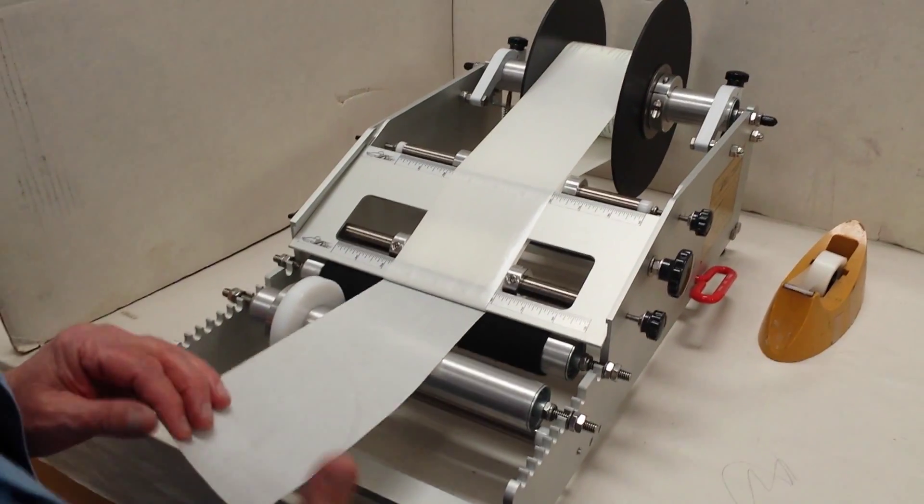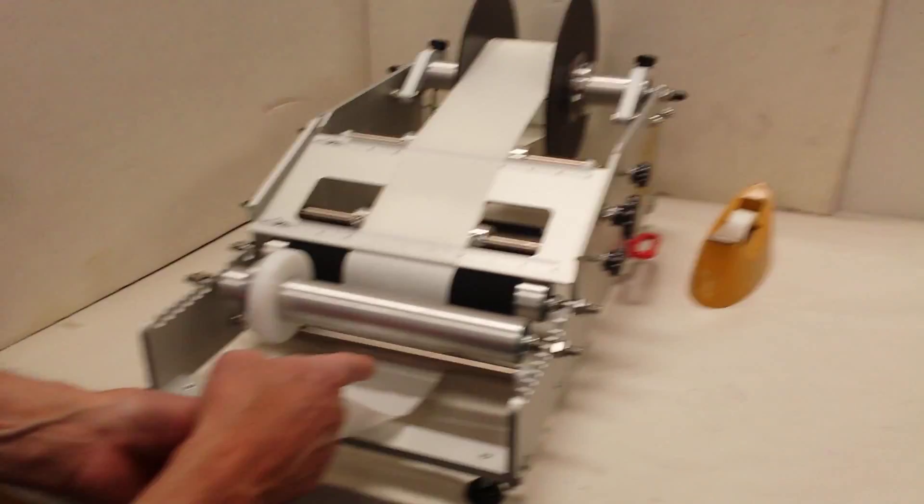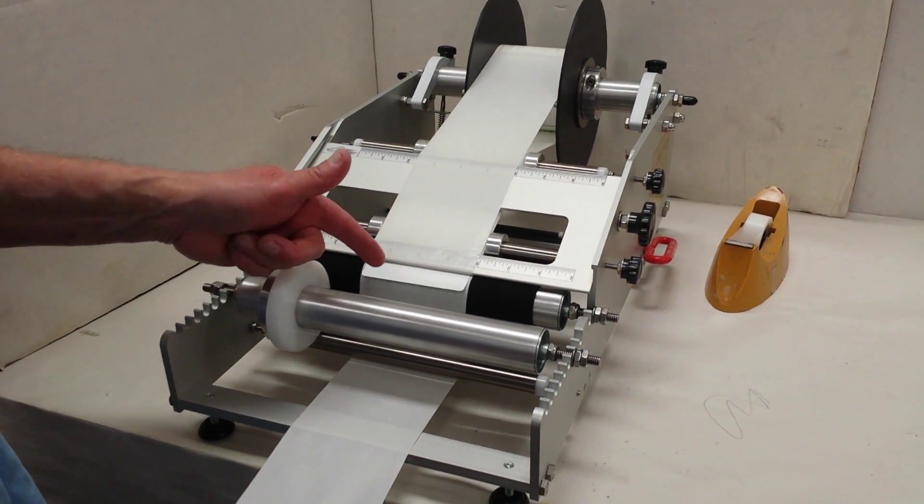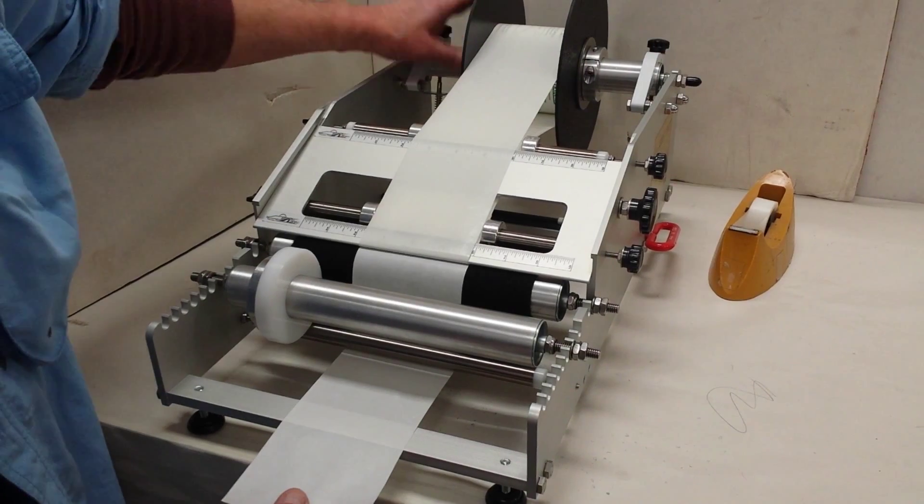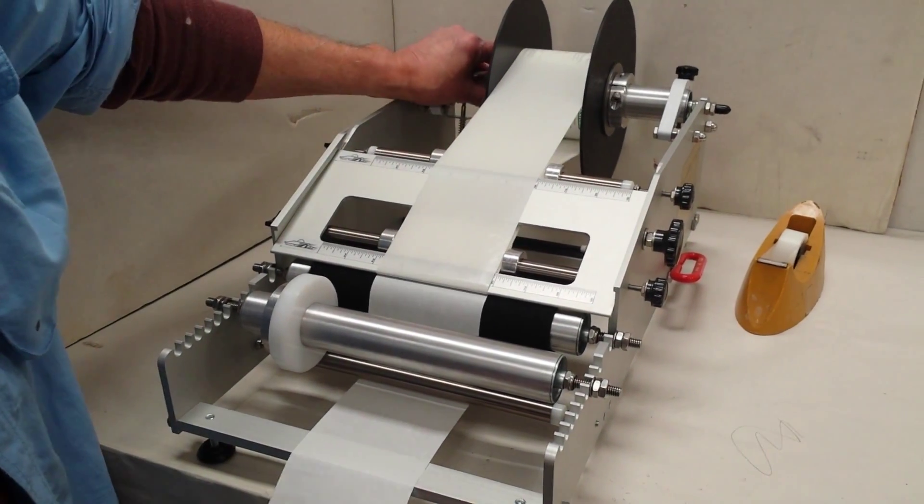Remove the tape and take the end down underneath the small roller at the bottom of the machine and out the front of the machine. When you pull on the substrate paper your first label will pop out sticky side up. First label, sticky side up. Machine is threaded.